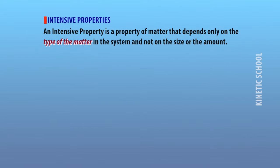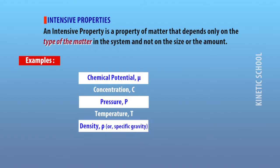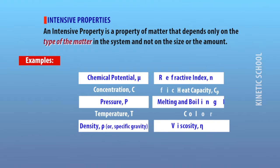An intensive property is a property of matter that depends only on the type of matter in the system and not on the size or amount. Examples include chemical potential, concentration, pressure, temperature, density, refractive index, specific heat capacity, melting and boiling point, color, and viscosity.